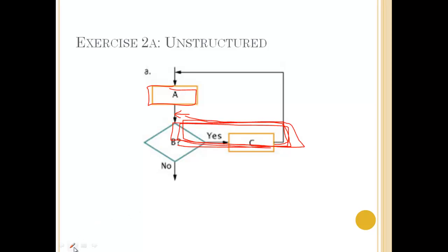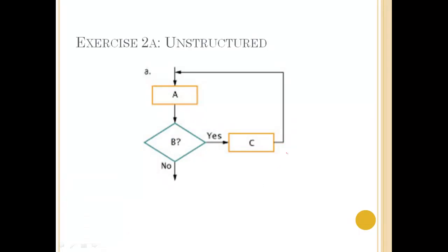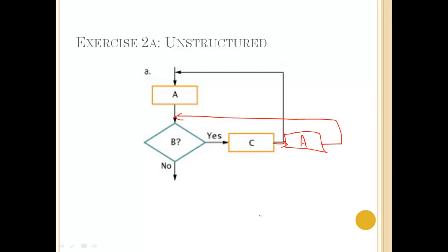So the other problem with this unstructured logic is we need to have a repeat of process A so that the sentinel value can be modified. That's how we would fix this unstructured flowchart.